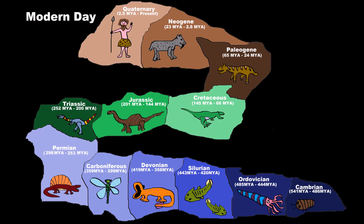I drew this model for us, and it's displaying the 12 periods of life. But first, before we get to periods, we have to talk about eras. There have been three eras of life so far on our little planet we call Earth.